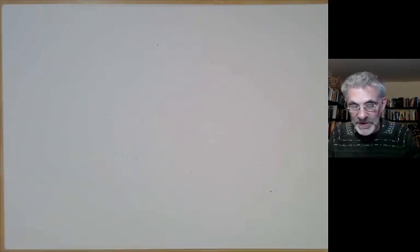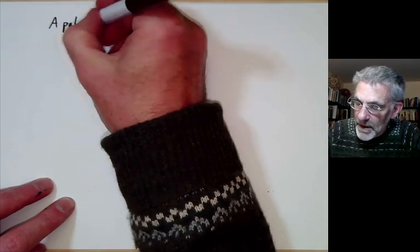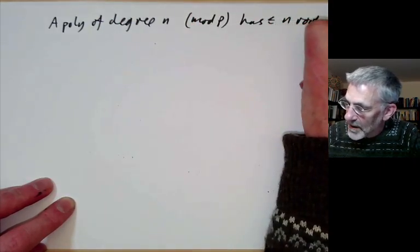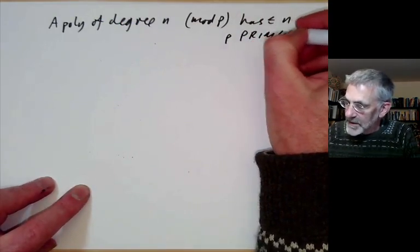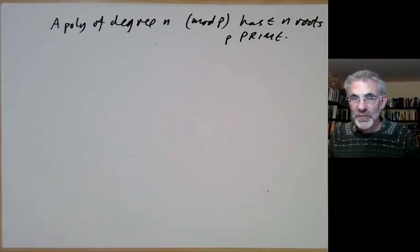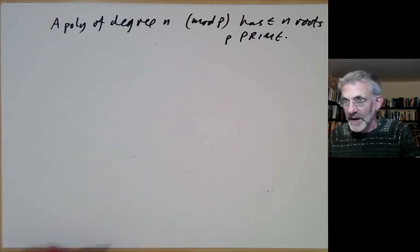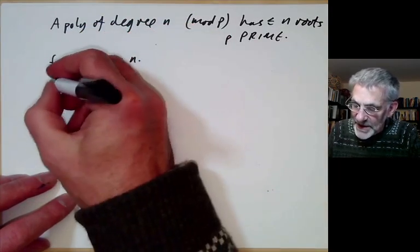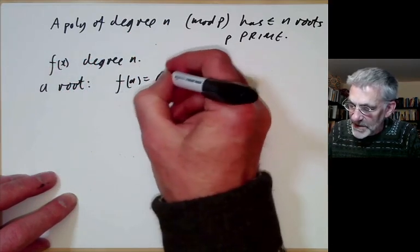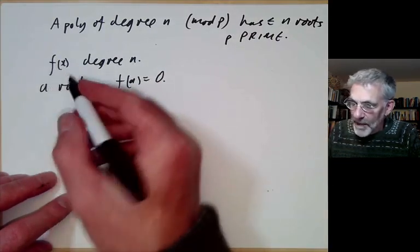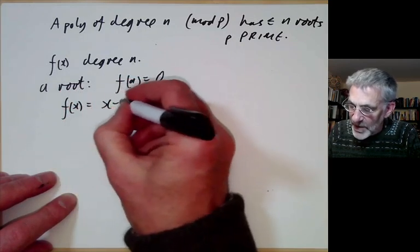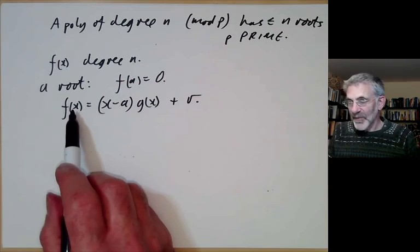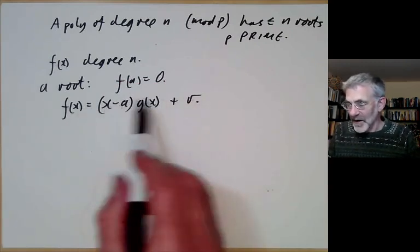Let me say more about why polynomials of degree n, mod p, have at most n roots, provided p is prime. To understand why we need p to be prime, let's go through the usual proof. Suppose we have a polynomial f(x) of degree n, and suppose a is a root, meaning f(a) = 0. We take f(x) and divide it by (x − a) to get g(x) plus some remainder r.